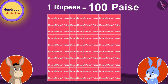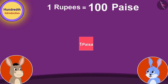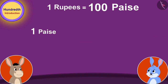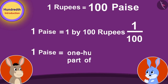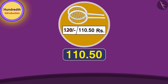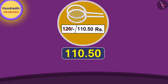Bunny laughed and said, Bhola, how many paise is one rupee equal to? 100 paise, Bhola replied quickly. Exactly! Suppose if we represent hundred paise by making a hundred squares, then one square would be equal to one paise. If we take one of these hundred squares, we can write it as the fraction one by hundred. Therefore, one paise is one hundredth part of a rupee.